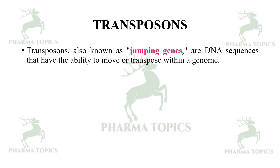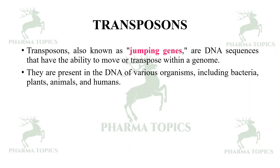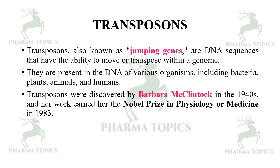Transposons are also known as jumping genes — DNA sequences that have the ability to move or transpose within a genome. They are present in the DNA of various organisms including bacteria, plants, animals, and humans. Transposons were discovered by Barbara McClintock in 1940, and her work earned her the Nobel Prize in Physiology and Medicine in 1983.